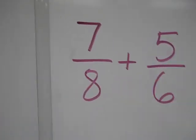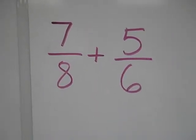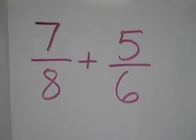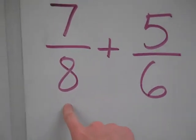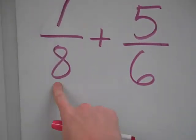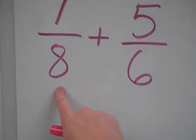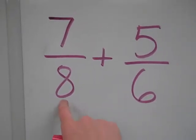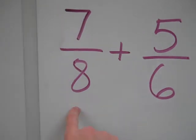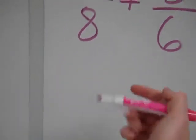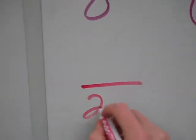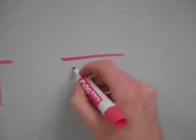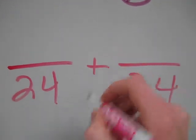And the last example here, I have 7 eighths plus 5 sixths. So again, I usually start with my bigger number. And I'll do the multiples of my bigger number until I know which one works for the other one. So 8 doesn't work for 6. 16 doesn't work for 6. 24 works for 6. So I'm going to do 24s. I'm going to make these both 24s. This is an addition problem.